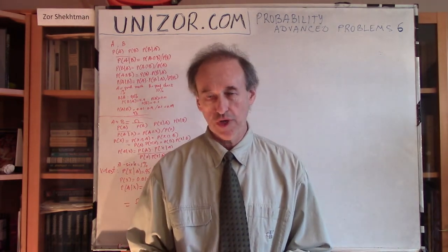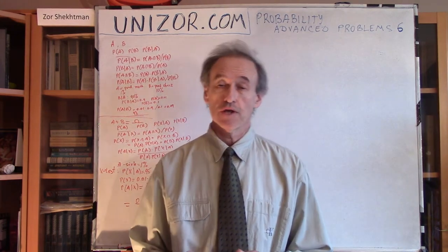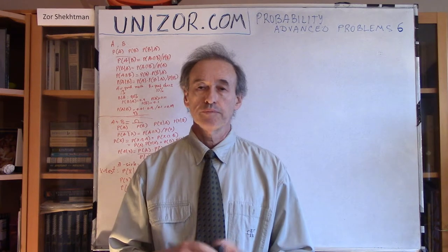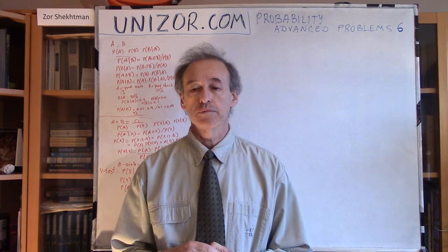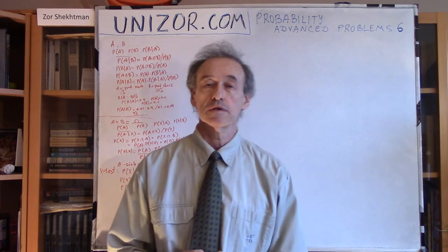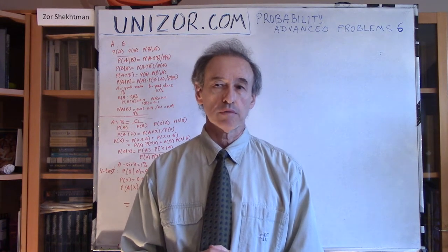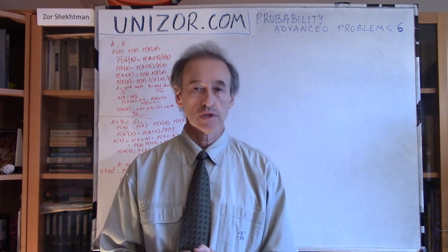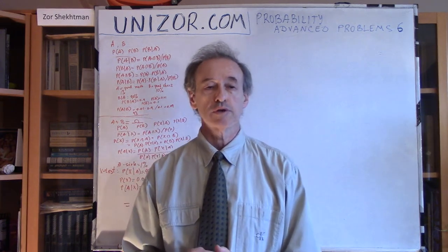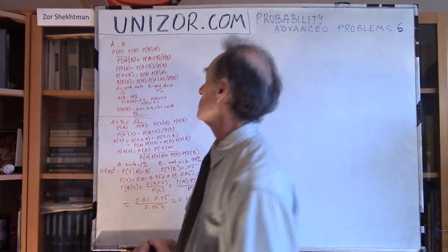Hi, I'm Zor. Welcome to UniZor Education. I continue the course of advanced mathematics for teenagers presented on UniZor.com, and that's where I suggest you watch this lecture. This lecture contains a couple of problems in theory of probabilities — problem number six in this series. These are problems related to the Bayes formula for conditional probabilities, and I suggest you refresh the theoretical material which precedes this lecture dedicated to conditional probabilities.